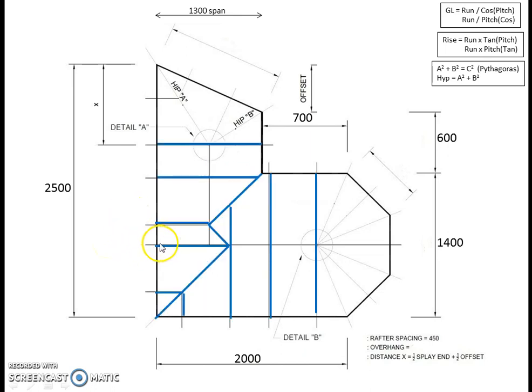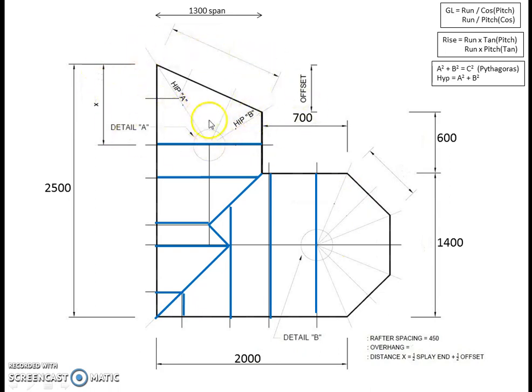So those are all the rafters we have calculated. That covers everything in the major and minor roof, not including the octagonal end and the splayed end.